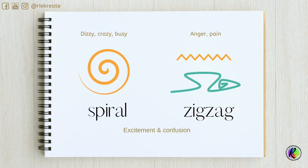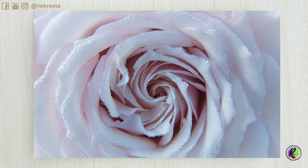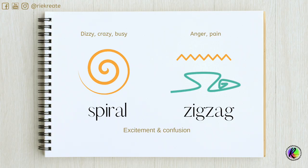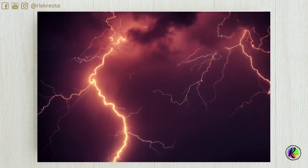Spiral lines can be dizzy, crazy, and busy. There are many spirals that exist in nature. Sometimes an artist may use a spiral design to create an optical illusion. Zigzag lines are often used to show anger and pain.